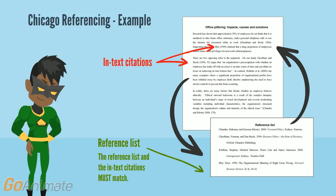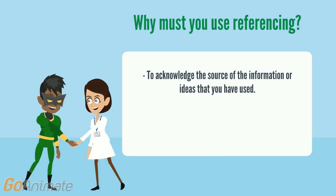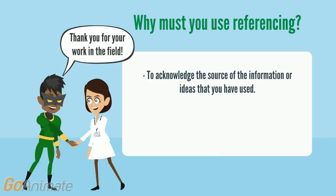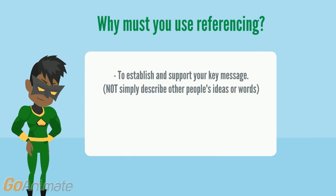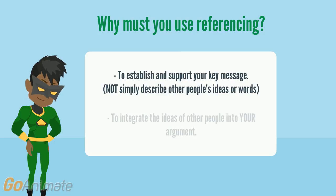The reference list and in-text citations must match. Referencing is used to acknowledge the source of the information or ideas that you have chosen to use in your academic writing. It is used to create strong arguments that are supported by evidence, not just telling your lecturer what you have read. Referencing is used to support your key message, not simply describe other people's ideas or words. It is also used to integrate the ideas of others into your own argument.